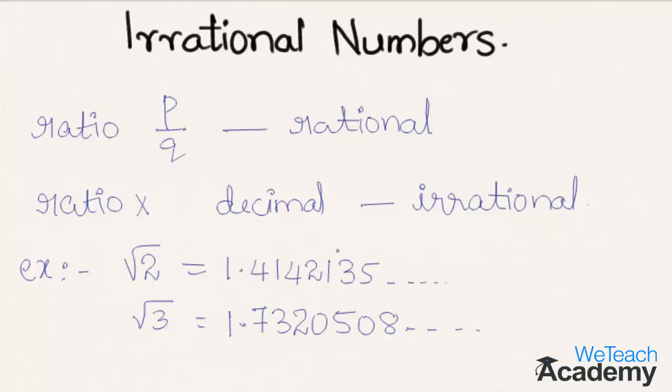Here are a few examples: root two is equal to one point four one four and so on. Irrational numbers are decimal numbers which have endless digits to the right of the decimal point.